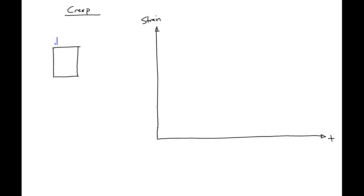When a stress is applied to some member, it's going to have two different types of deformations. What's going to happen first is there's an immediate strain that will happen. This immediate strain is going to essentially happen instantaneously as the load is applied. This is what we'll call elastic strain, or strain on loading.